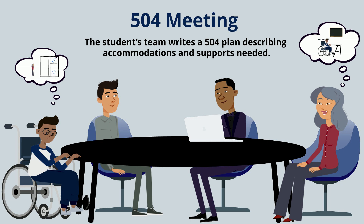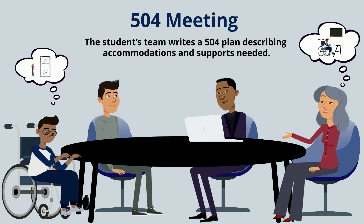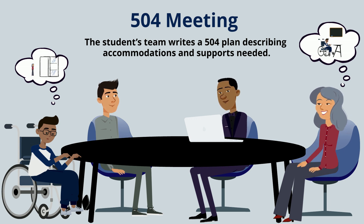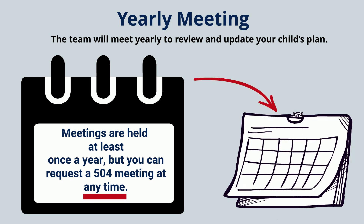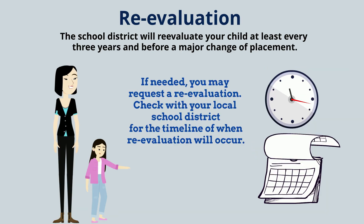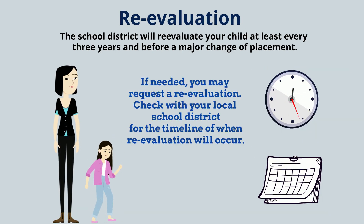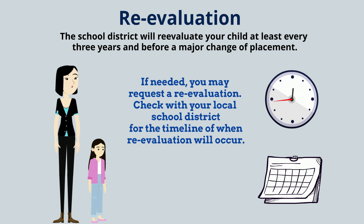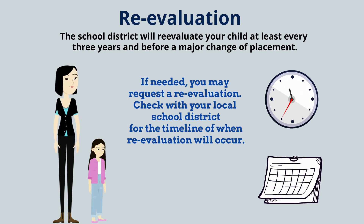504 meeting: the student's team writes a 504 plan describing accommodations and supports needed. Yearly meeting: the team will meet yearly to review and update your child's plan. Meetings are held at least once a year, but you can request a 504 meeting at any time. Re-evaluation: the school district will re-evaluate your child at least every three years and before a major change of placement. If needed, you may request a re-evaluation. Check with your local school district for the timeline of when re-evaluation will occur.